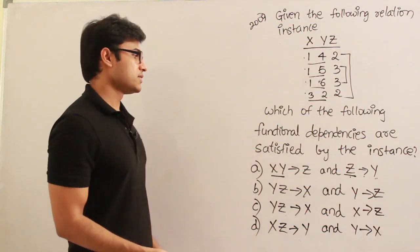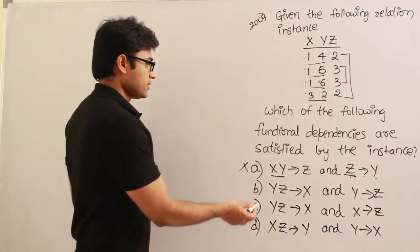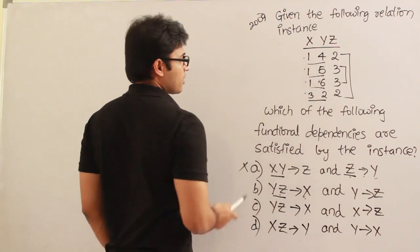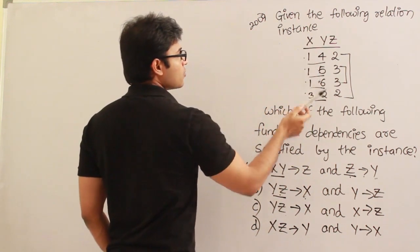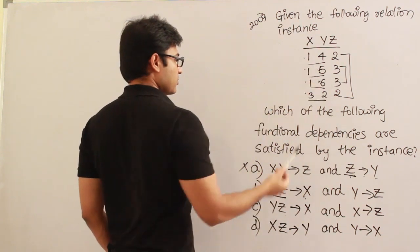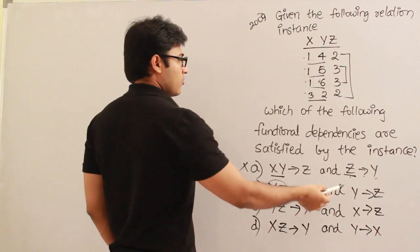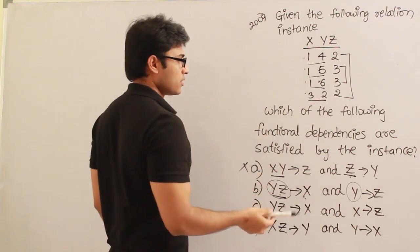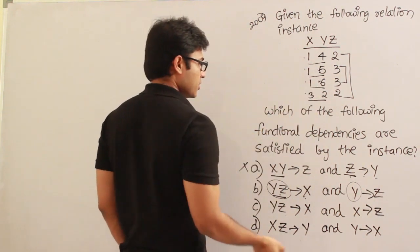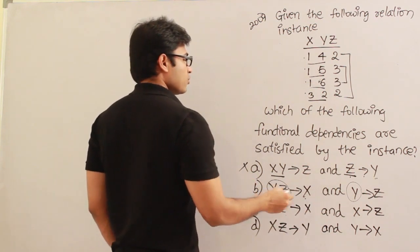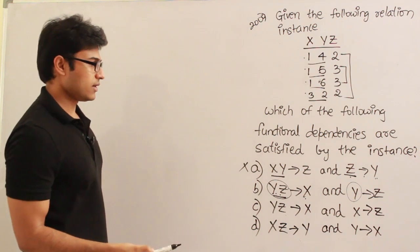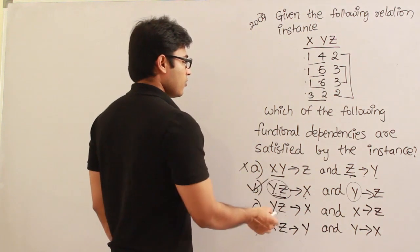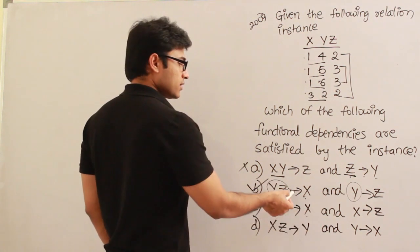Now let's see this one: YZ and X. Left side is YZ, so let's see if there are any repetitions: 4,2, 5,3, 6,3, 2,2. There is no repetition at all on the left side, therefore there is no violation. What about Y? 4,5,6,2 - there is no repetition here also. So since on both sides there is no repetition on the left hand side, definitely they will hold. Violation will be there only when there is repetition. So this one will definitely hold.